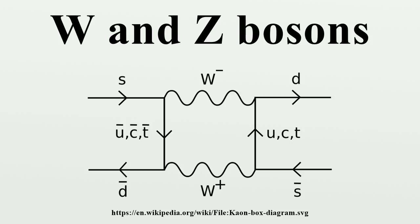Following the spectacular success of quantum electrodynamics in the 1950s, attempts were undertaken to formulate a similar theory of the weak nuclear force. This culminated around 1968 in a unified theory of electromagnetism and weak interactions by Sheldon Glashow, Steven Weinberg, and Abdus Salam, for which they shared the 1979 Nobel Prize in Physics. Their electroweak theory postulated not only the W bosons necessary to explain beta decay, but also a new Z boson that had never been observed. The fact that the W and Z bosons have mass while photons are massless was a major obstacle in developing electroweak theory.